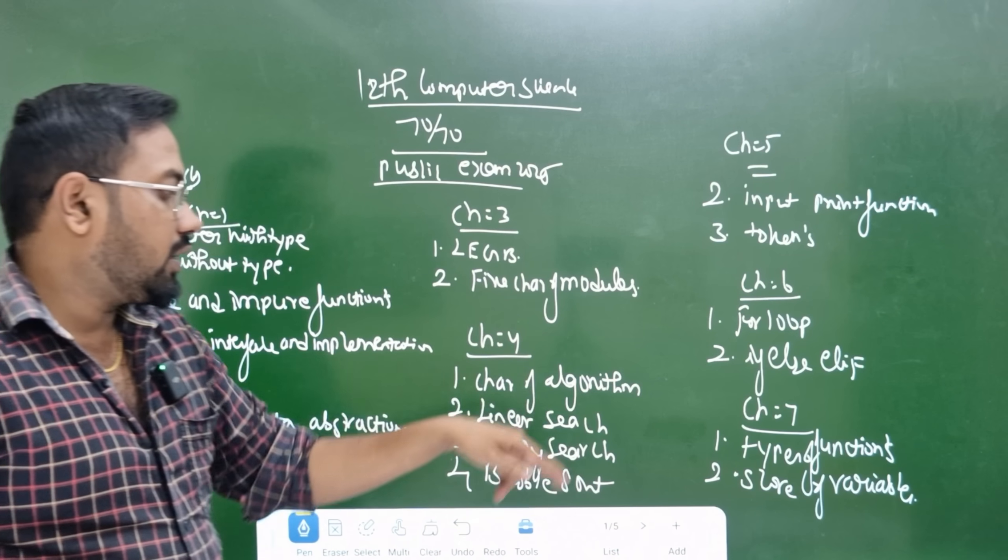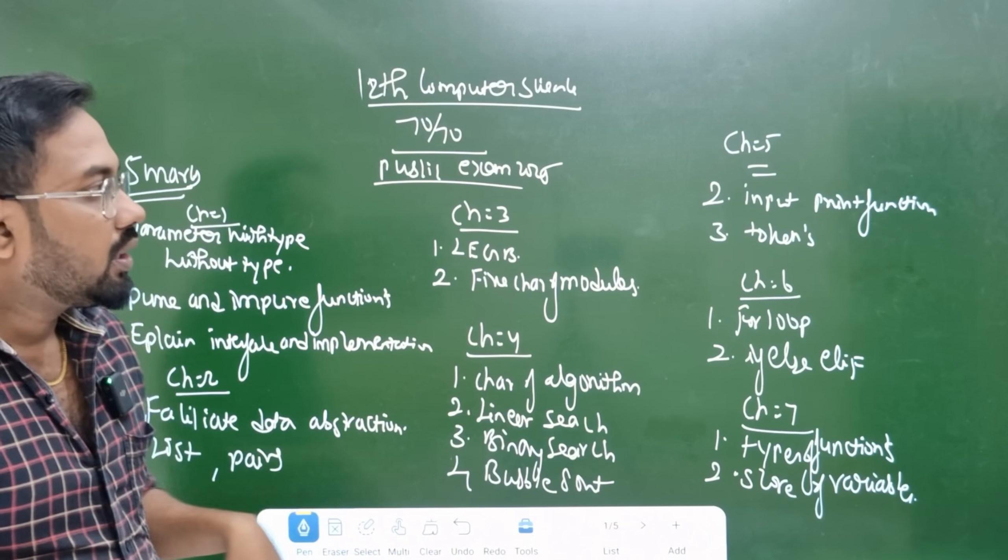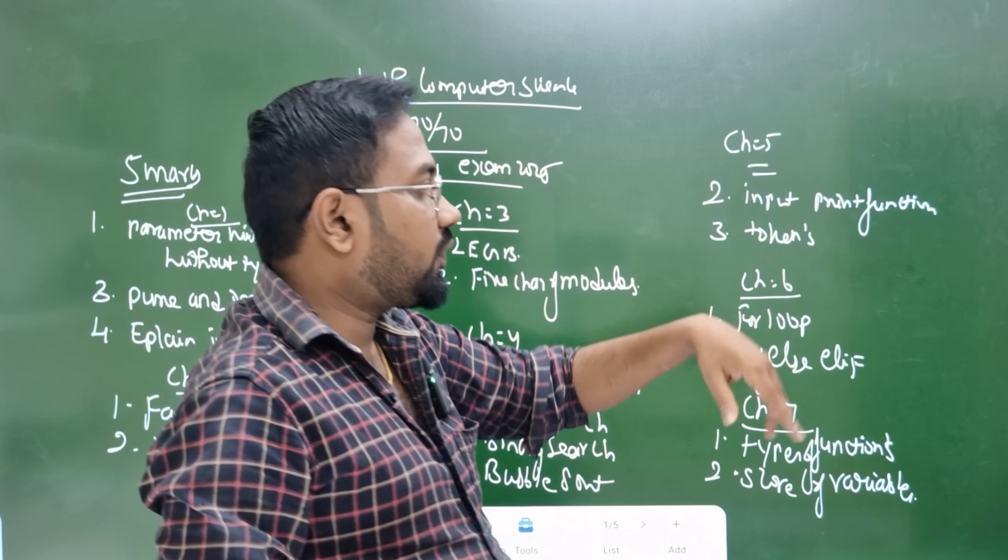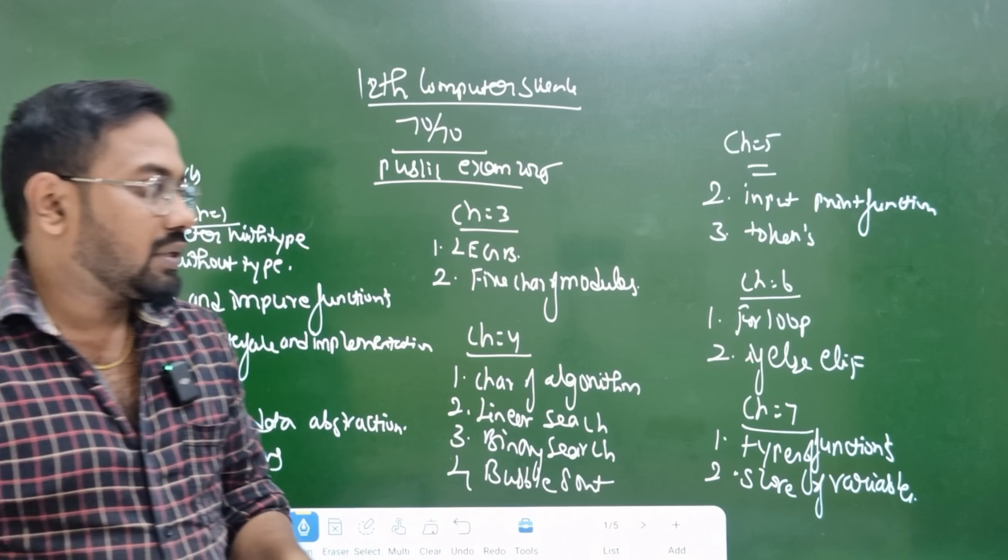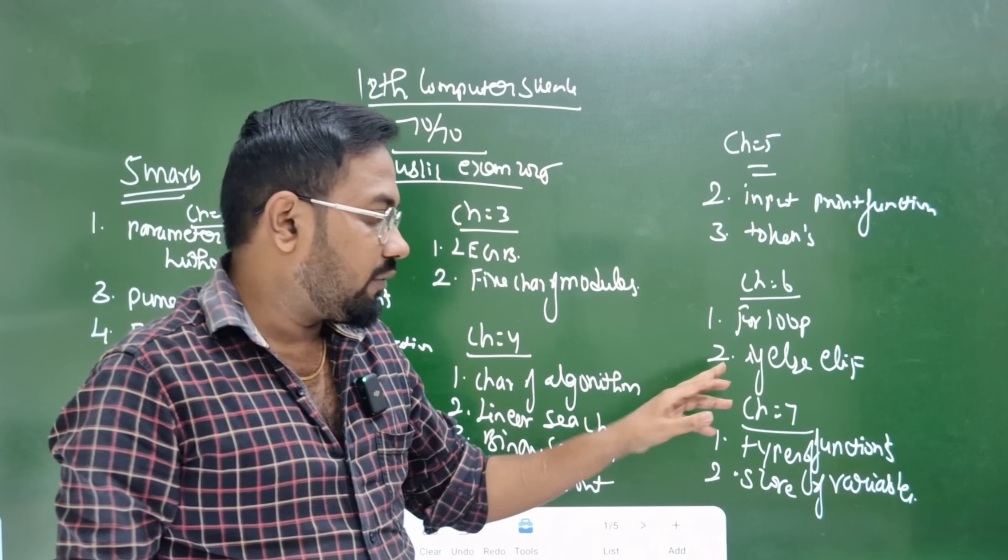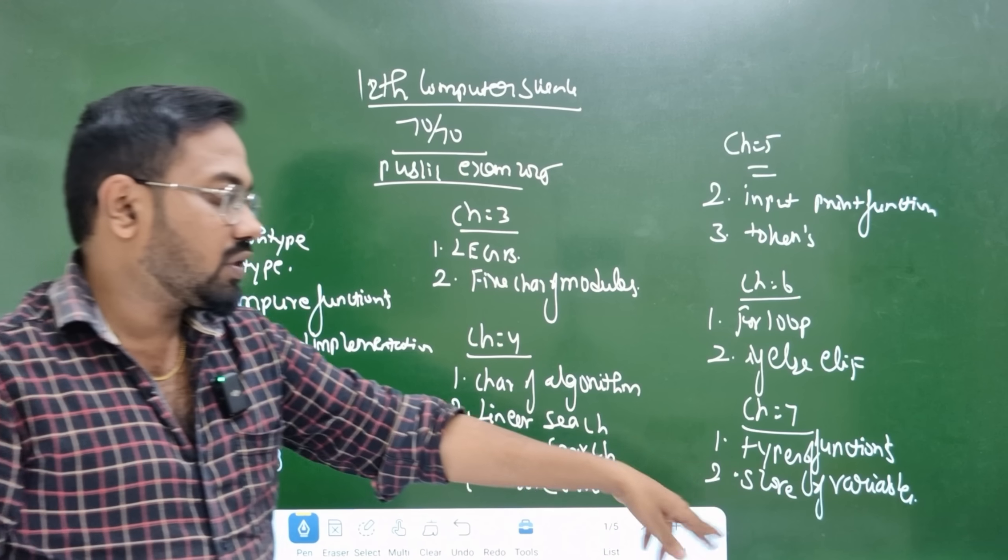Chapter 4 discusses algorithms including linear search, binary search, and bubble sort. Chapter 5 covers input print function and tokens. Chapter 6 has for loop, if else, and elif. Chapter 7 deals with types of functions and scope of variables.